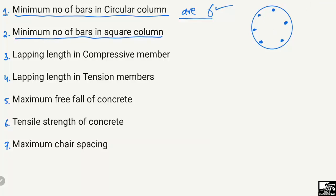The second point states the minimum number of bars in a square column. If I draw a square column here, the minimum number of bars in a square column is four — one bar at each corner. The minimum number of bars in a square column should not be less than four.